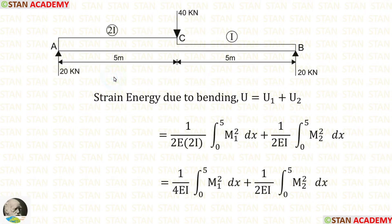In this beam, we are having two different parts. The first part, AC, and the second part, CB. So, for finding out the strain energy due to bending, we have to make two parts. U1 is for the first half, U2 is for the second half. So, we have to make two sections. The first section for AC and the second section for CB.